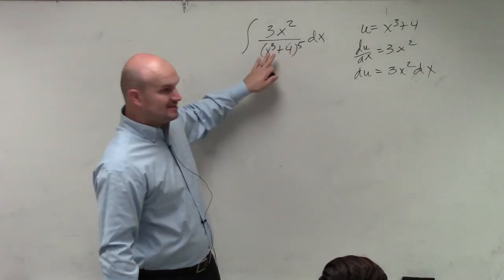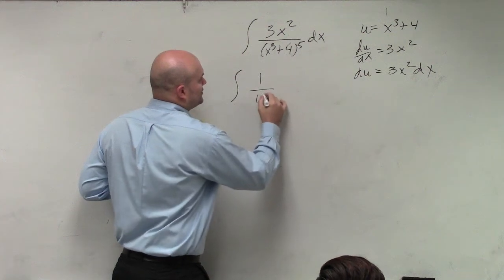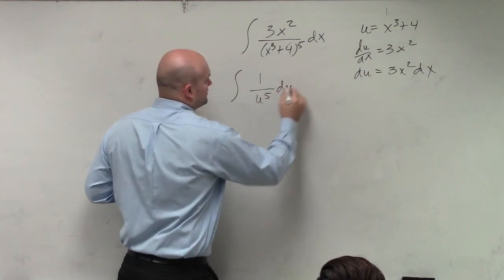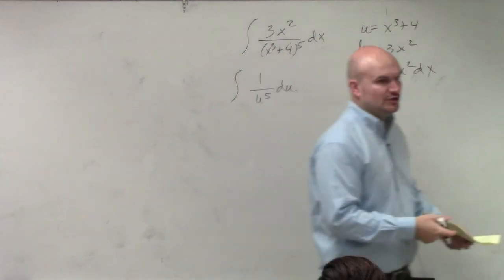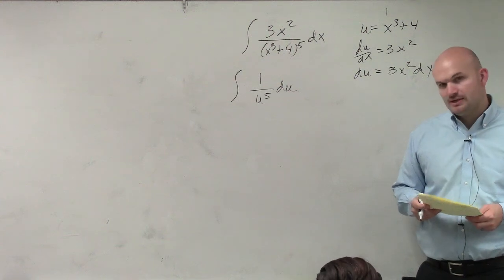OK, so now I have that the same. But when I go and look to integrate this, I have 1 over u to the fifth du. Well, it's not 1 over u, so I can't use my ln like I did before. Right? Can't do that.